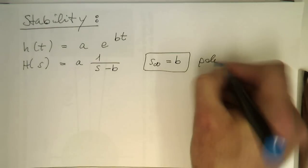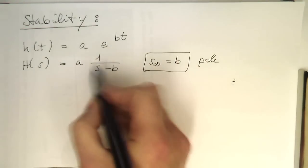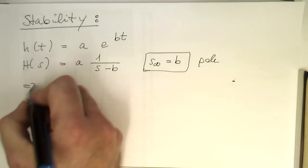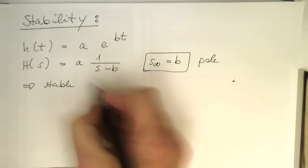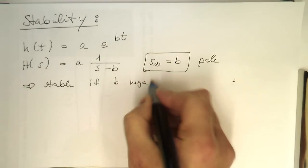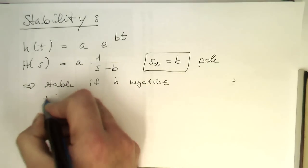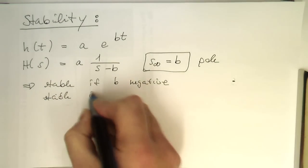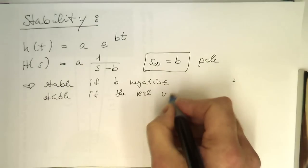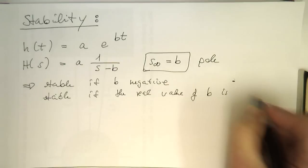That's our pole. And obviously, this system is only stable if b is negative. Stable if b is negative, or stable in case of a complex number if the real value of b is negative.